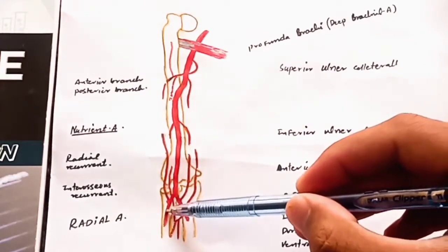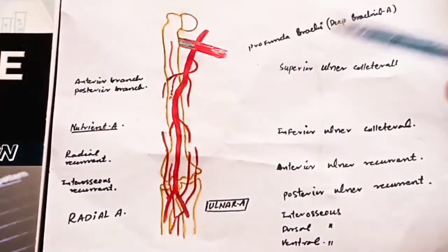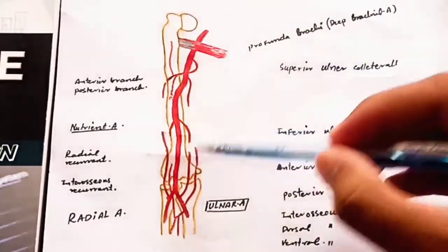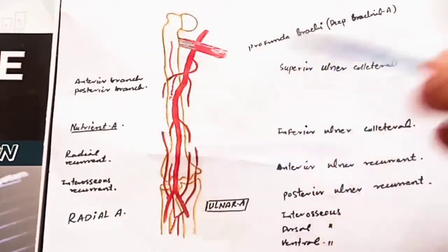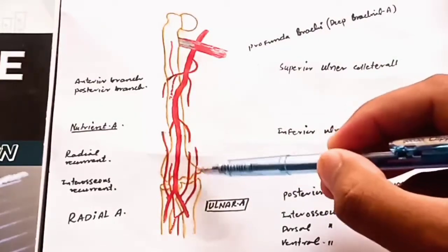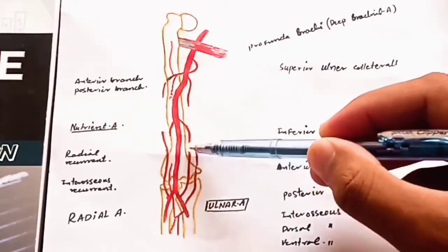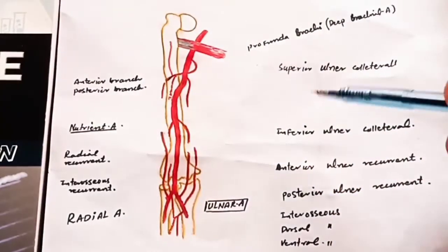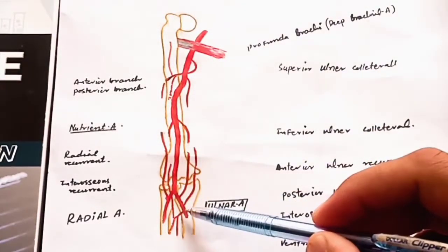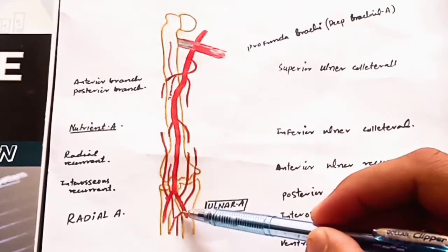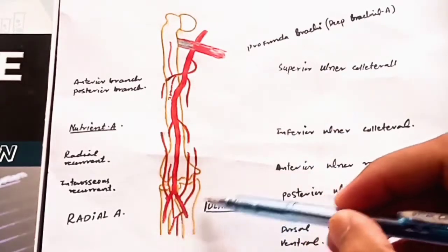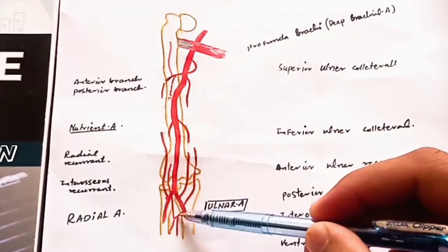Just at the level of the neck of the radius, the brachial artery divides into its terminal branches: the radial artery and the ulnar artery. From the ulnar artery, three branches arise: the first is the anterior ulnar recurrent, the second is the posterior ulnar recurrent — these go upward, which is why they are called recurrent arteries.